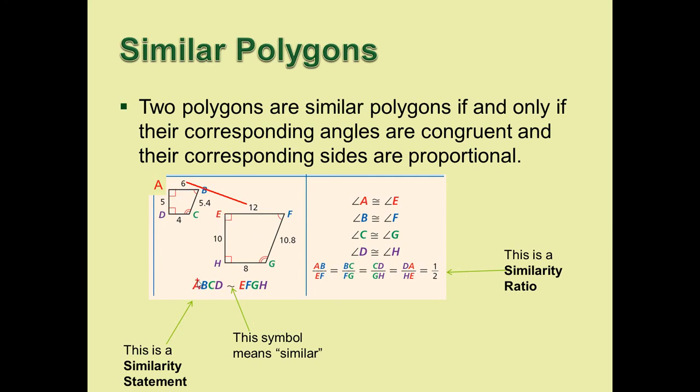AB is similar to EF. Notice that AB were the first two letters. EF are the first two letters. AB over EF, 6 over 12 is 1 half. Same with any other corresponding sides. 4 over 8. Notice that DC are the last two letters. GH are the last two letters. They're corresponding to each other. Divide 4 over 8, you're also going to get a half.